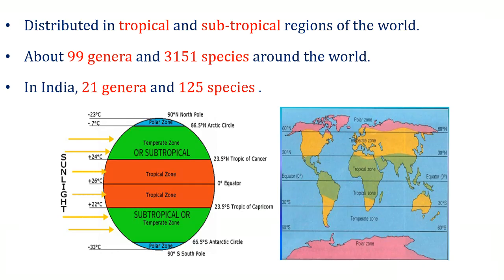Family Verbenaceae is distributed in tropical and subtropical regions of the world. In this image, you can understand which part of the world belongs to the tropical region and subtropical region. Around the world, Family Verbenaceae is represented by 99 genera and 3,151 species. In India, Family Verbenaceae is represented by 21 genera and 125 species.